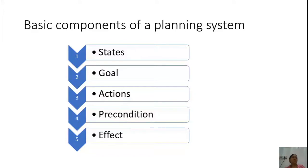In today's lecture we will look into the basic components of a planning system. To recap, as a human we plan only when we find it necessary, because planning involves some cost in terms of time and consciousness of our mind. We need to plan to achieve a specific goal. While planning, we list out the actions we need to take to reach a specific objective, and then follow those actions with the hope of reaching the desired goal. Similarly, in artificial intelligence we also have planning.